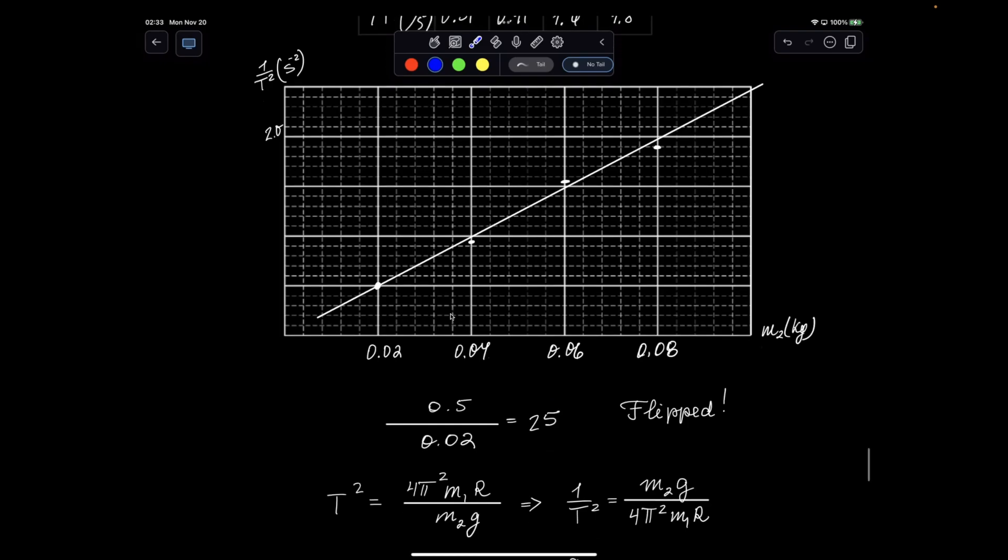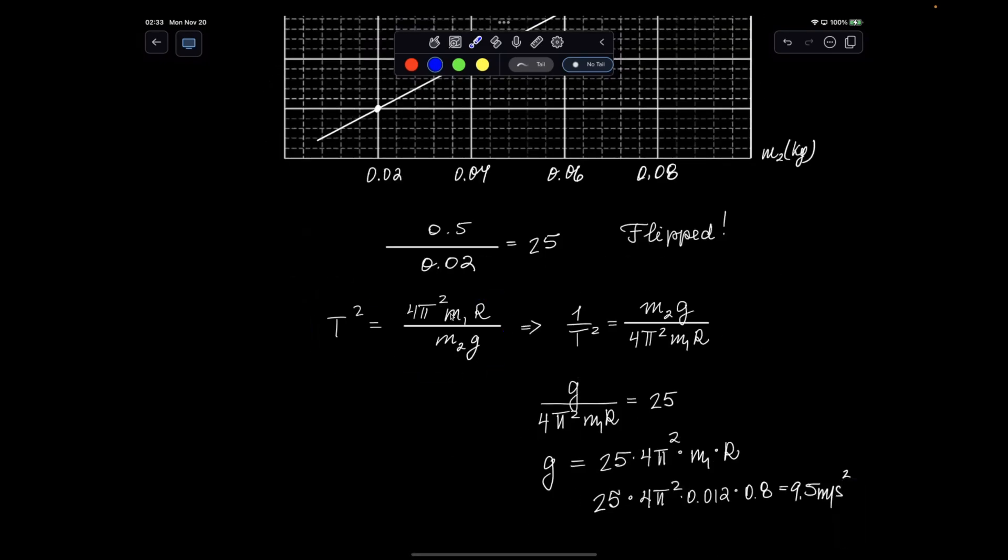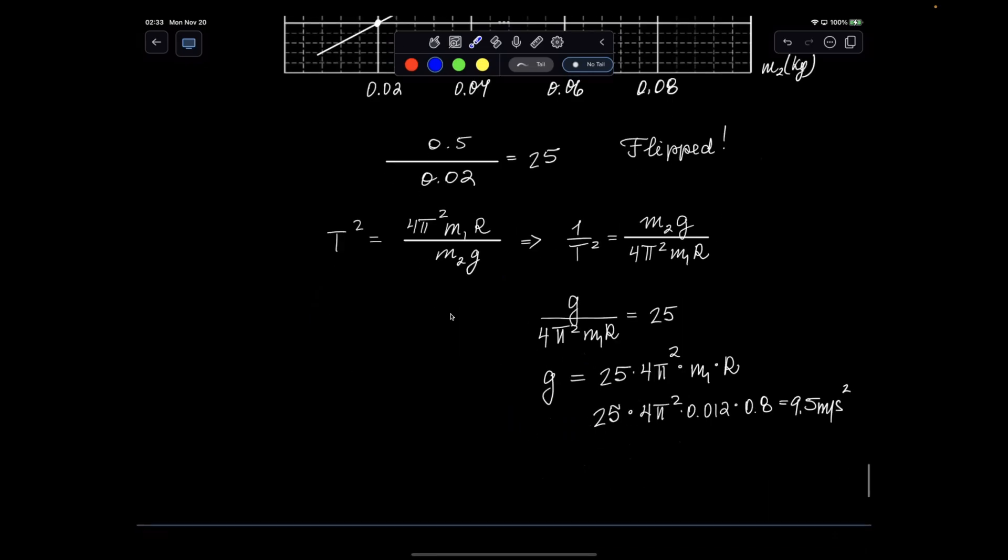But this slope is flipped. So remember, the formula is this. So then if I flipped it, then 25 was g over. And then therefore, I will do 25 multiplied by this denominator to get my g. And again, g was 9.5.